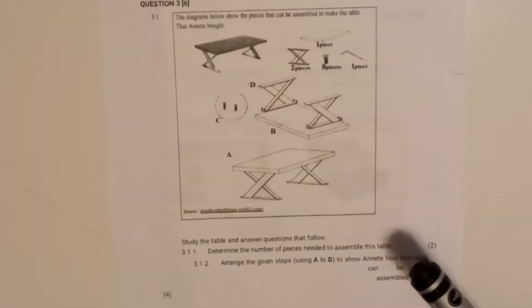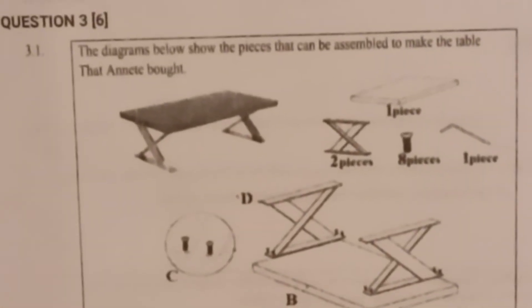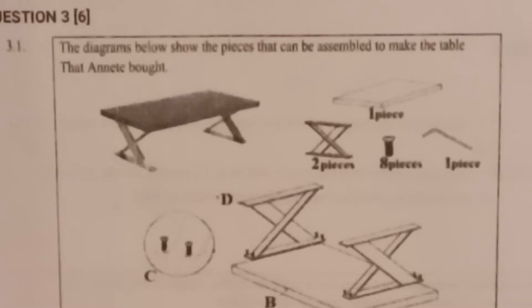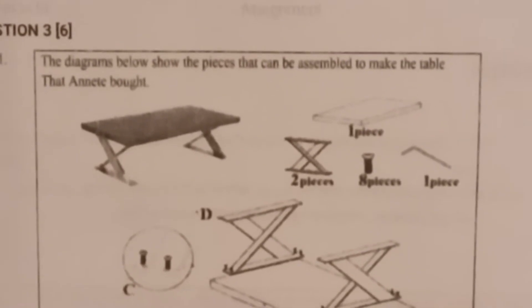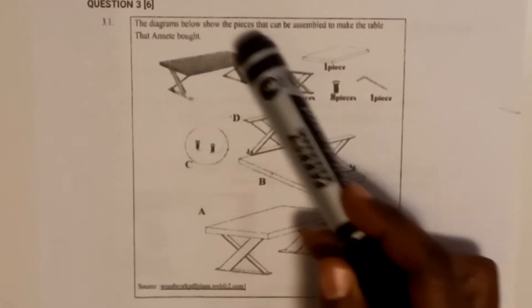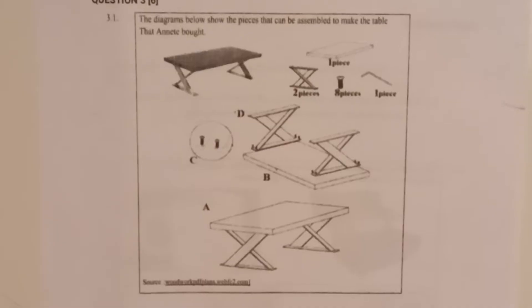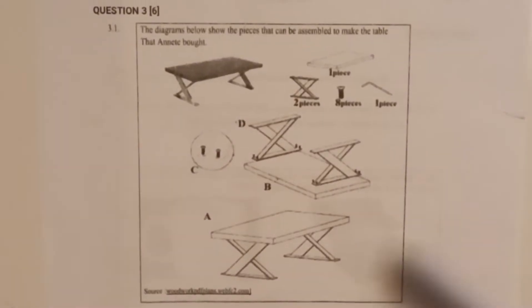This is question 3. It says the diagram below shows the pieces that can be assembled to make a table that Annele bought. So this person Annele bought a table. They've given you a picture of the complete table and then the individual pieces, telling you how many pieces there are.